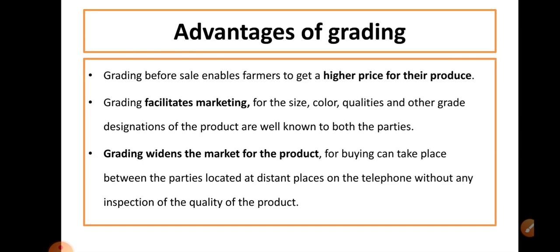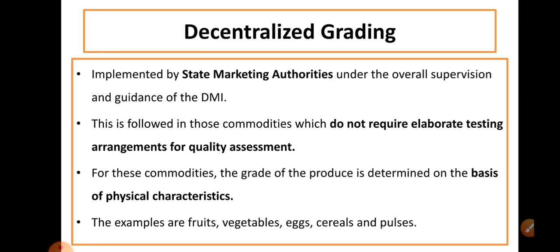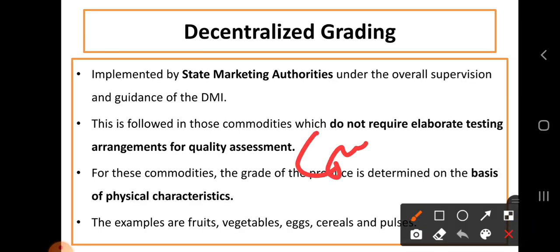Another type of grading is grading at producer level. Sometimes the farmer also carries out the grading process, grading the produce based on his own knowledge.